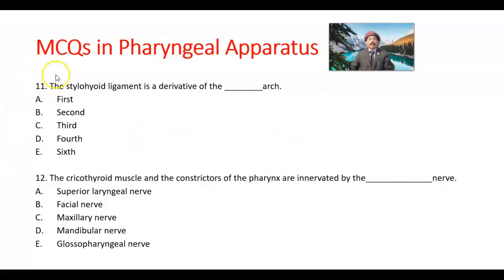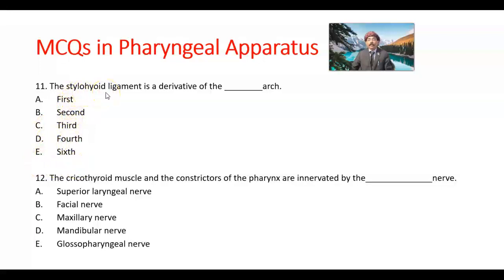Question number 11. The stylohyoid ligament is a derivative of which pharyngeal arch — first, second, third, fourth, or sixth? The answer is the second arch, option B.